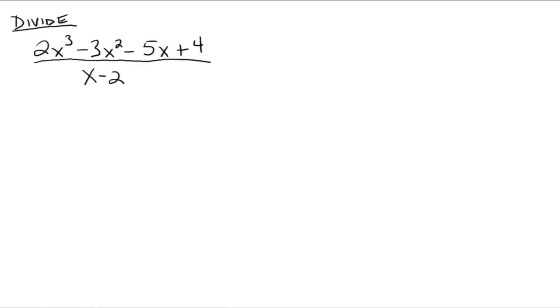Here's an example of how to use synthetic division. First thing we notice is that we have a polynomial up here in the numerator — 2x cubed minus 3x squared minus 5x plus 4 — all divided by a binomial x minus a number. So the question is, what's the k from that x minus k form? Well, it would be 2, because there's the x, the minus, and then this would be the k. So take the k value, which in this case is 2, and we're going to put it in this little half box thing.